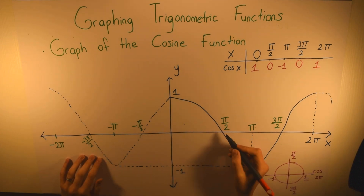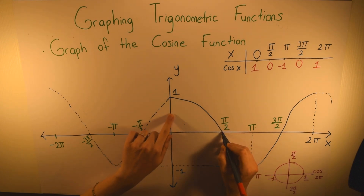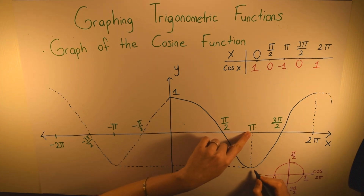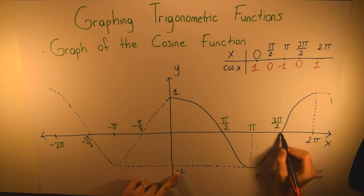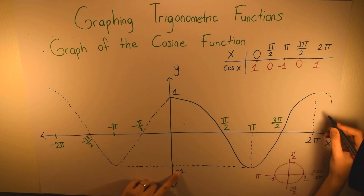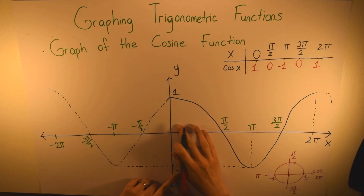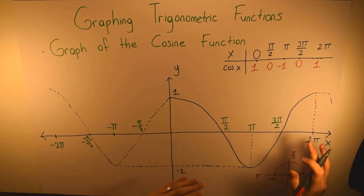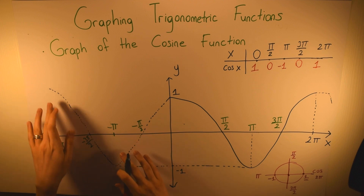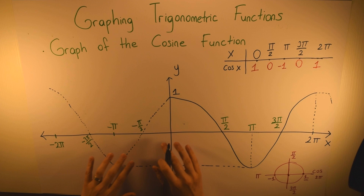On the graph of the cosine function: at 0 it equals 1, at π/2 it's 0, at π it equals minus 1, at 3π/2 it's 0, and at 2π it equals 1. This curve repeats every time — you can see the same curve appears again and goes on repeating.